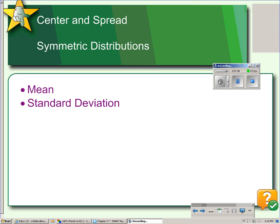The mean is not resistant to outliers, which is why we only use the mean for symmetric distributions.